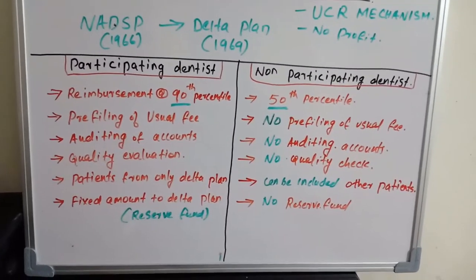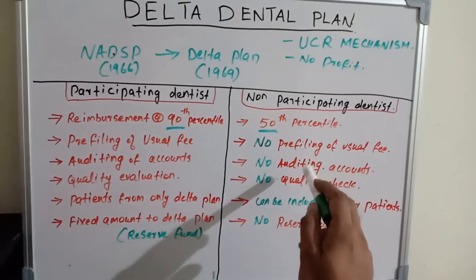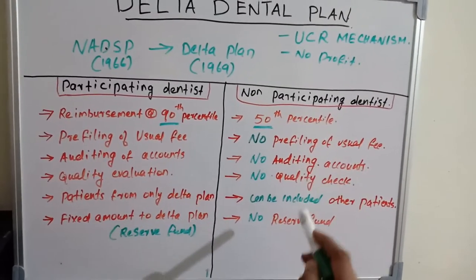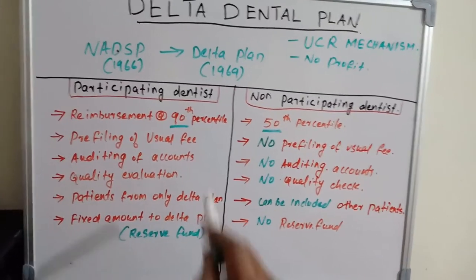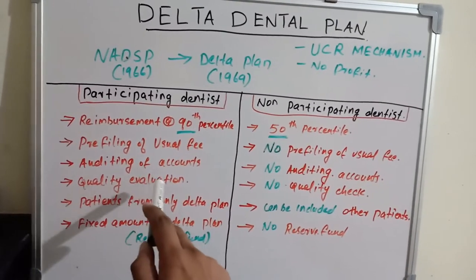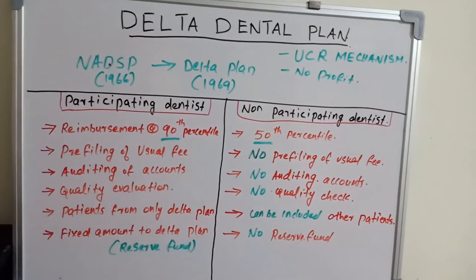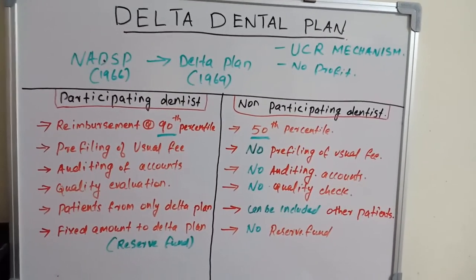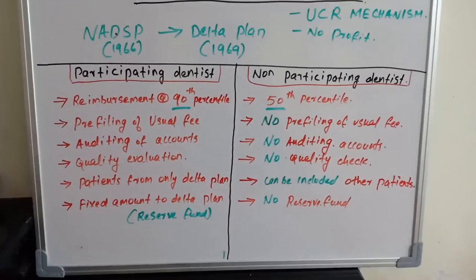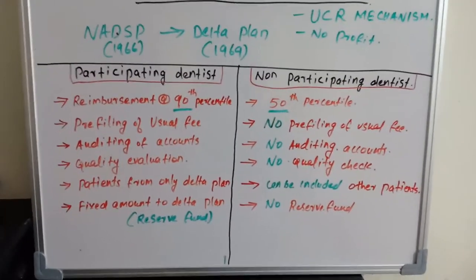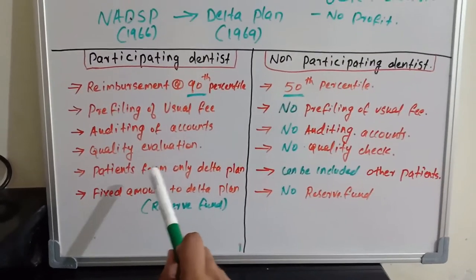For participating dentists, there will be auditing of accounts by Delta Dental plan auditors, but the non-participating dentist has no auditing of accounts. Additionally, there will be a post-quality check evaluation by inspectors from the Delta Dental plan for participating dentists, but there is no quality check for non-participating dentists.